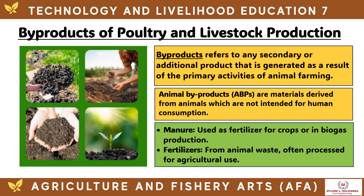Byproducts refer to any secondary or additional product generated as a result of the primary activities of animal farming. Animal byproducts (ABP) are materials derived from animals which are not intended for human consumption. Examples include manure used as fertilizer for crops or in biogas production, and fertilizers from animal waste often processed for agricultural use.